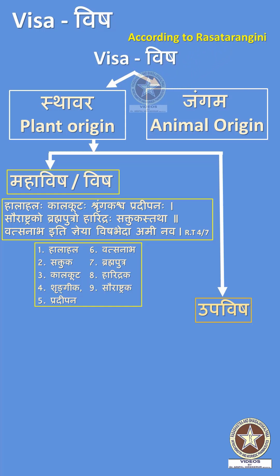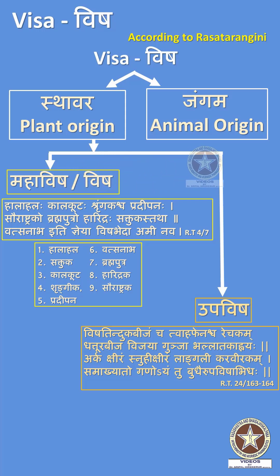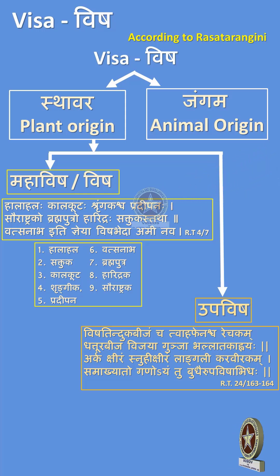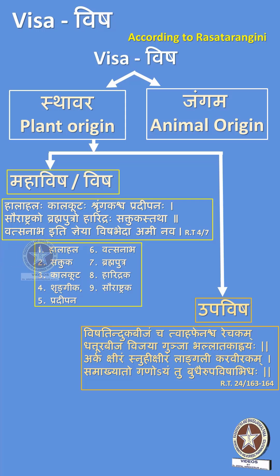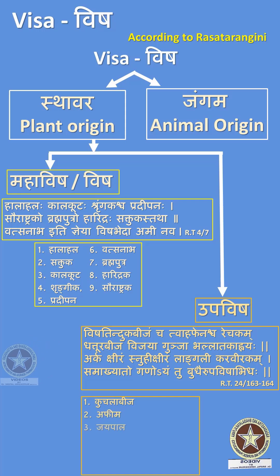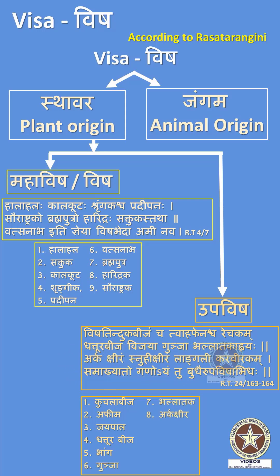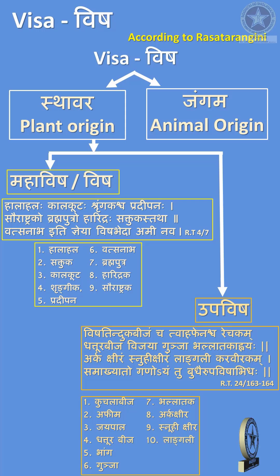The next category is Upavishavarga. Reference: Rasatarangini Chapter 24 Shloka 163-164. The Upavishahs are 11 in number: Kuchalabija, Ahifena, Jayapala, Datturabija, Bhanga, Gunja, Bhallataka, Arka Kshira, Snohi Kshira, Langali, and Karavira.